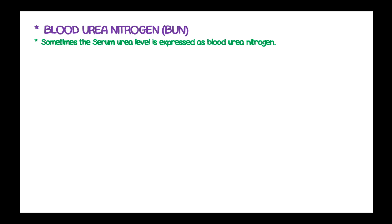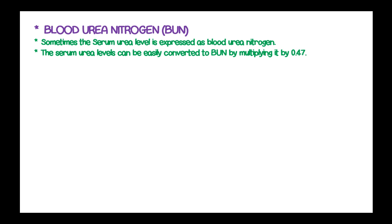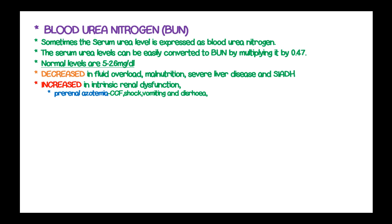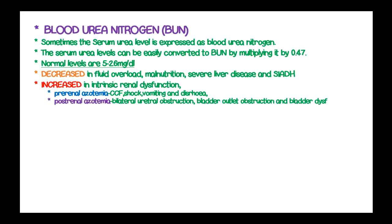Blood urea nitrogen (BUN) is another expression of serum urea level, and can be easily converted from serum urea by multiplying by 0.47. The normal levels are between 5 and 26 mg per deciliter. BUN is decreased in fluid overload, malnutrition, severe liver disease, and syndrome of inappropriate antidiuretic hormone production. BUN is increased in intrinsic renal dysfunction such as pre-renal azotemia due to congestive cardiac failure, shock, vomiting, and diarrhea, and in post-renal azotemia due to bilateral ureteral obstruction, bladder outflow obstruction, and bladder dysfunction.